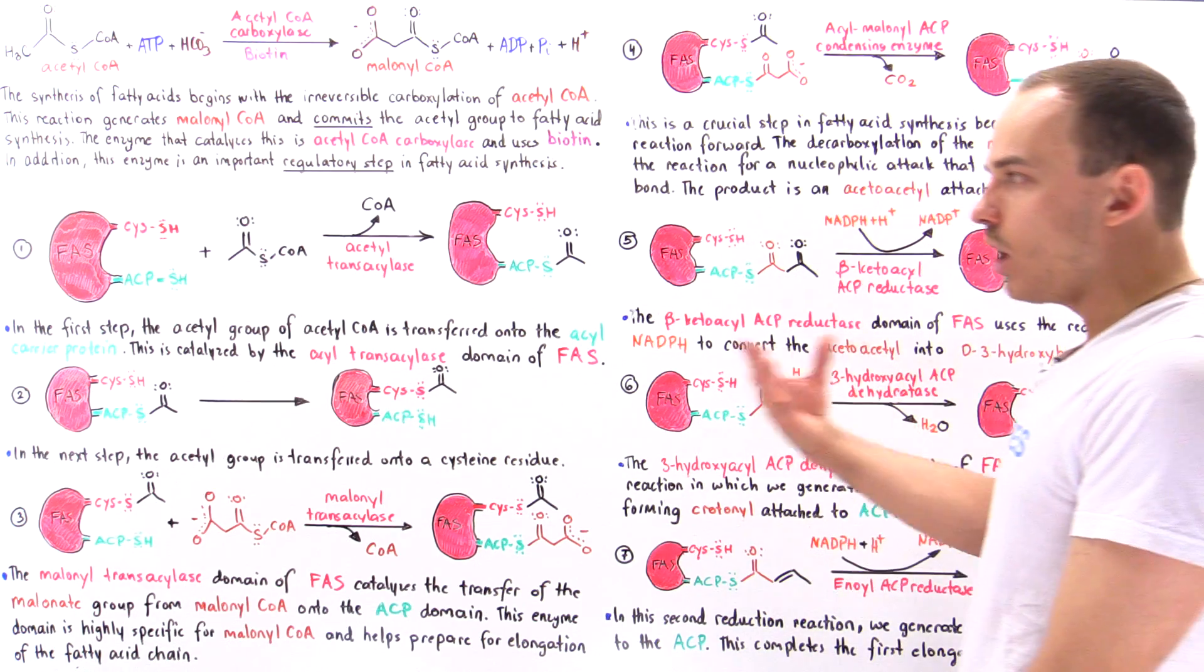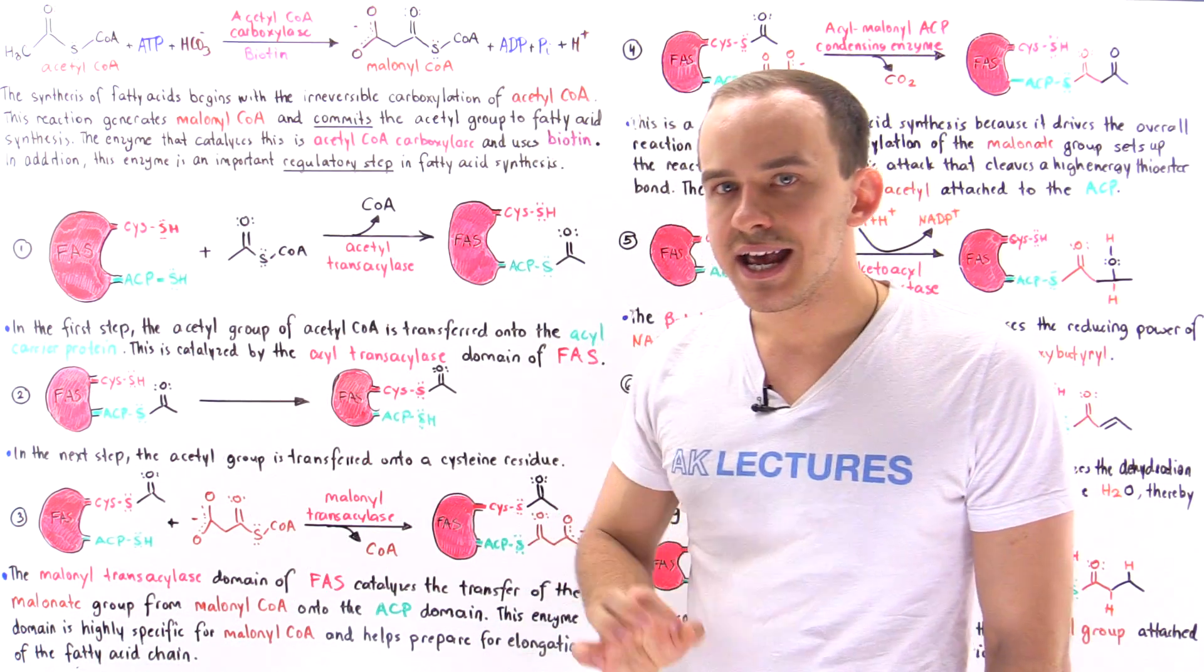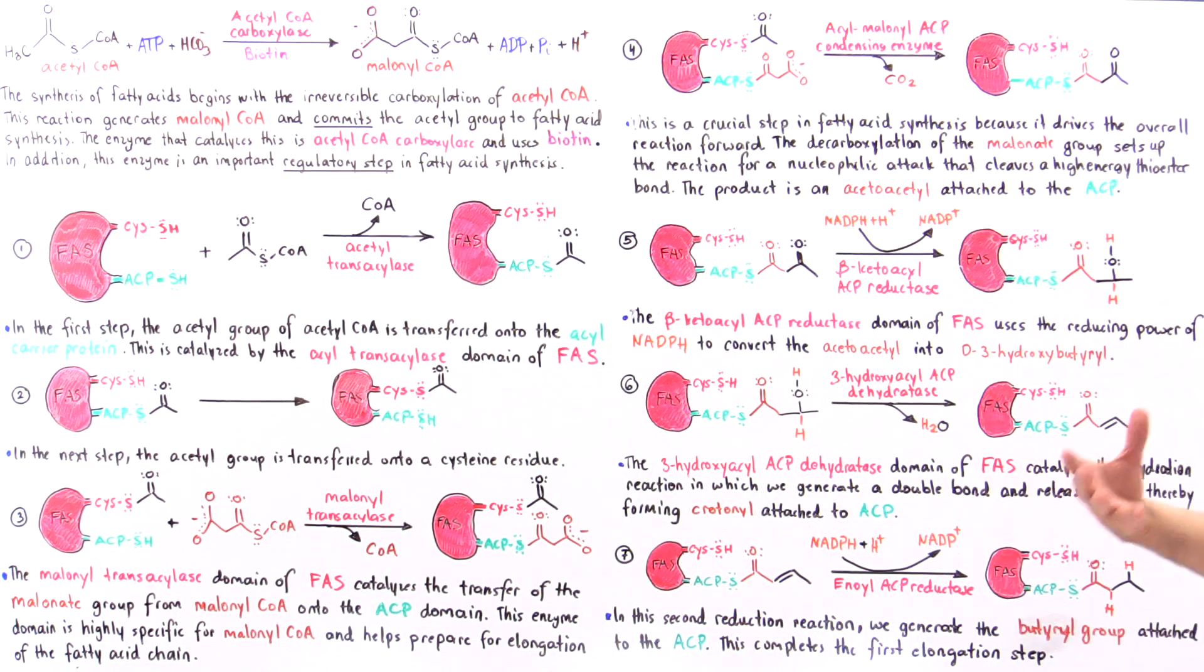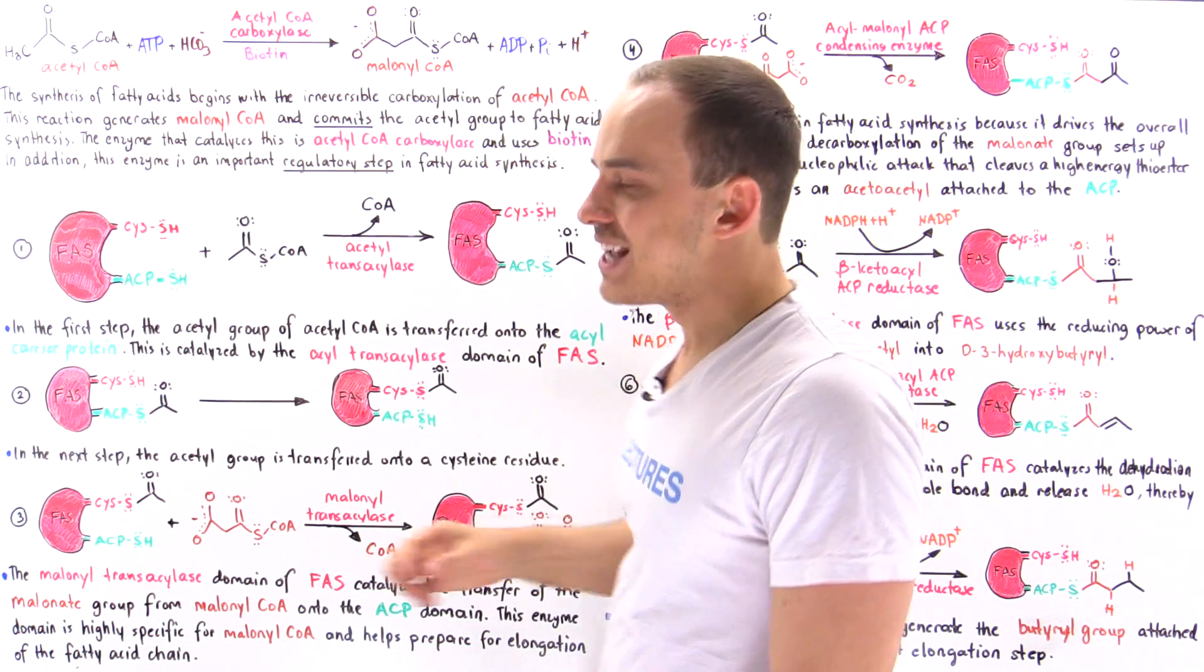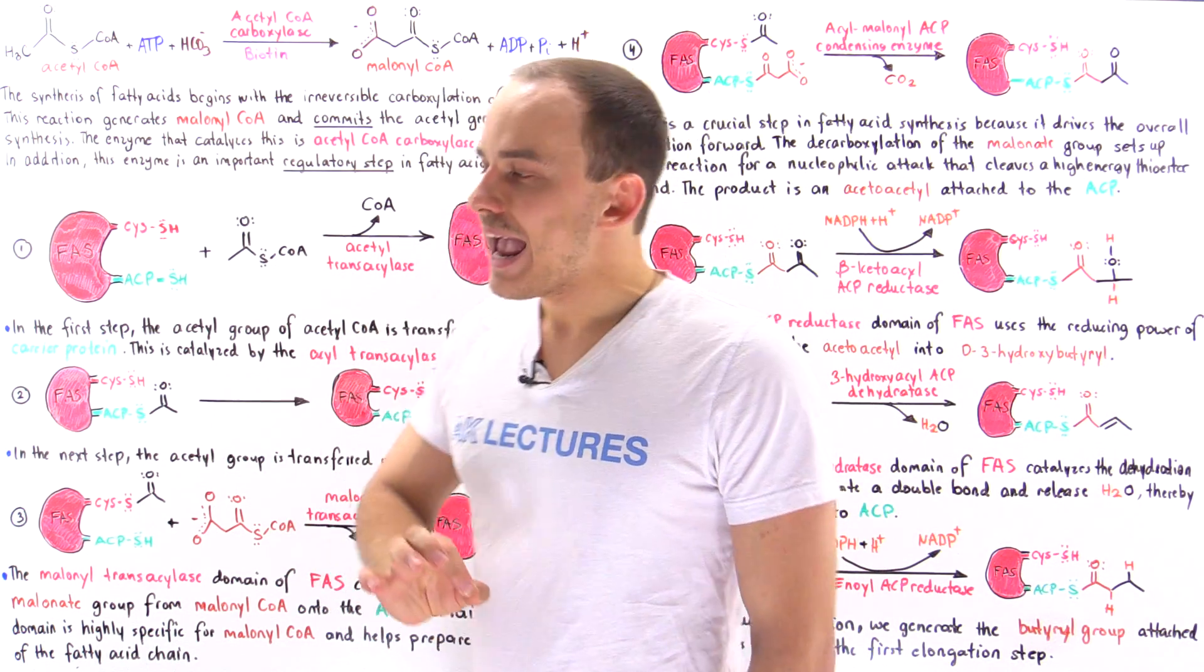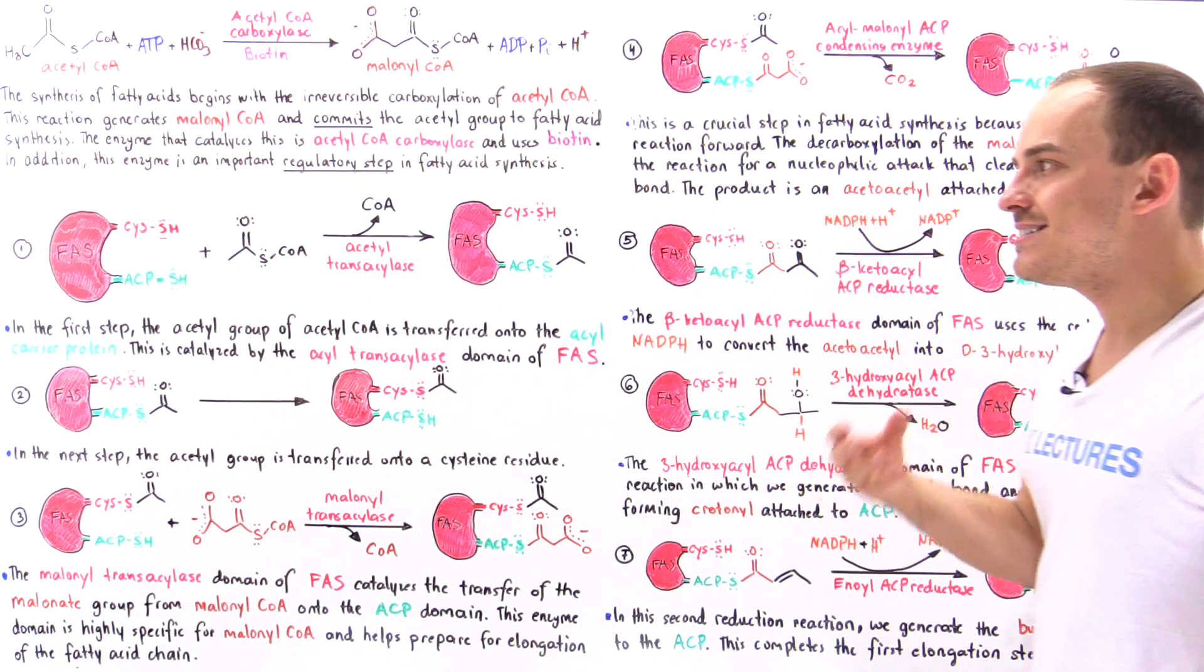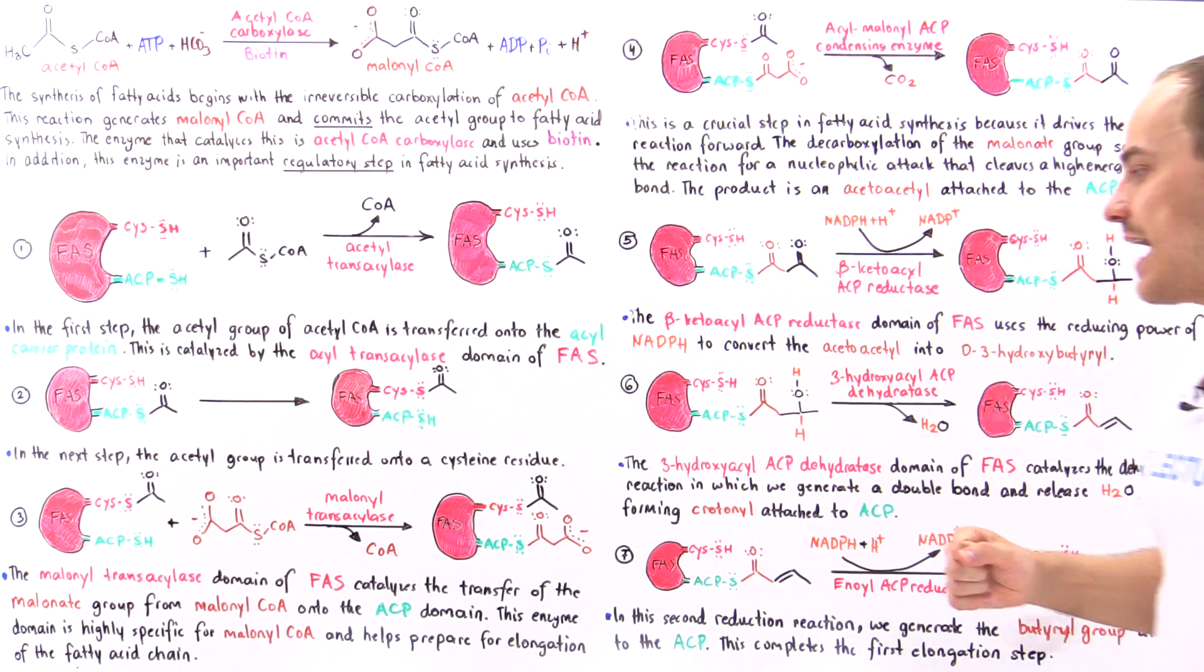Now what happens next, because ultimately we said that fatty acid synthase can generate a 16-carbon fatty acid molecule. So what happens next is this cycle basically takes place six more times, and when it takes place six more times it generates a 16-carbon palmitate fatty acid molecule.